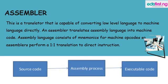What is an assembler? An assembler is a translator that is capable of converting low-level language into machine language directly. An assembler translates assembly language into machine code. An assembly language consists of mnemonics for machine codes. Assemblers perform a one-to-one translation to direct instruction.